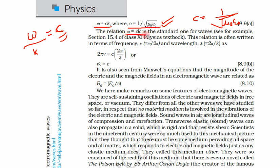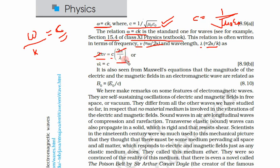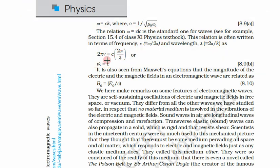The relation ω = ck is the standard one for waves. This relation is often written in terms of frequency. Frequency is ω/2π and wavelength is 2π/k. Substituting: ω = 2πν and k = 2π/λ, the 2π terms cancel and we get νλ = c, where c is the speed of light.